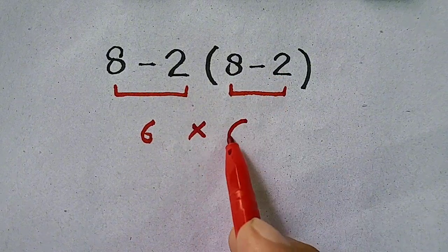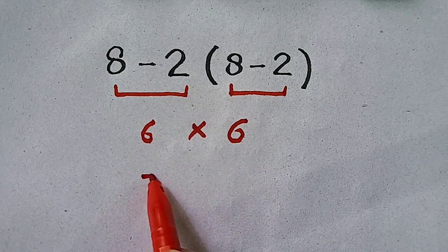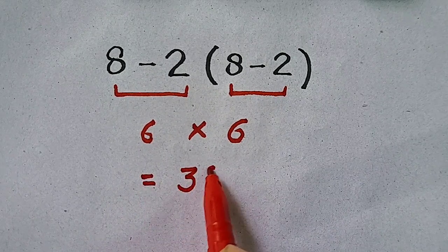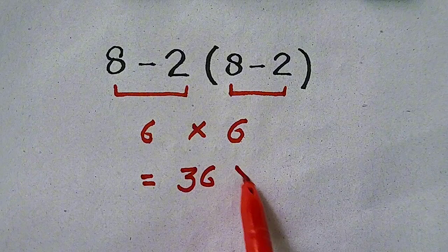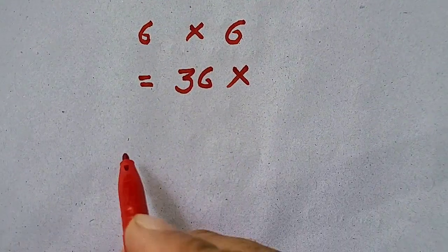8 minus 2 will be equal to 6. 6 times 6 will be equal to 36. But remember that it is wrong. Now we will do it with correct method.